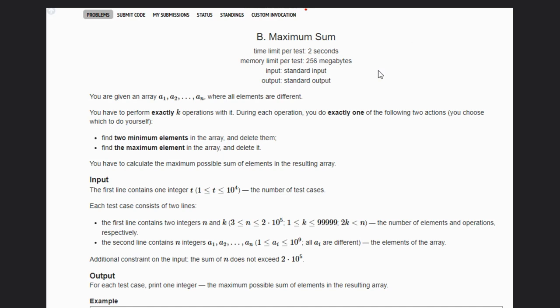In this problem we are given different elements a1 to an, and then we have to perform exactly k operations with it.